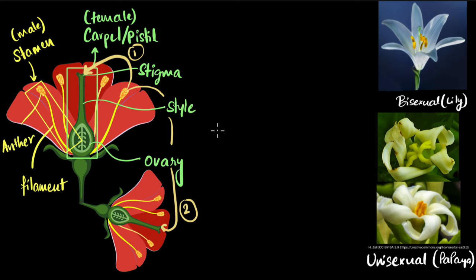And the third possibility is that you can have the pollen grains from one flower goes and sits on the stigma of a different flower from a different tree altogether or a different plant altogether. So all these are pollinations.